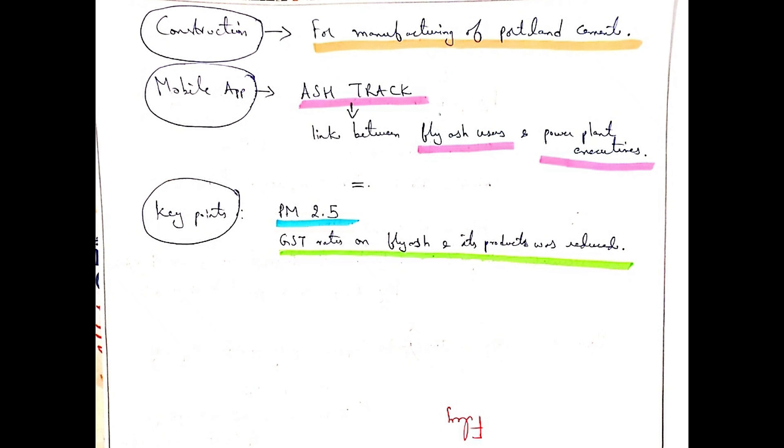the other industry which benefits from fly ash, the construction industry uses it for manufacturing Portland cement. A mobile app, Ash Track, is being introduced. It acts as a link between fly ash users and power plant executors.